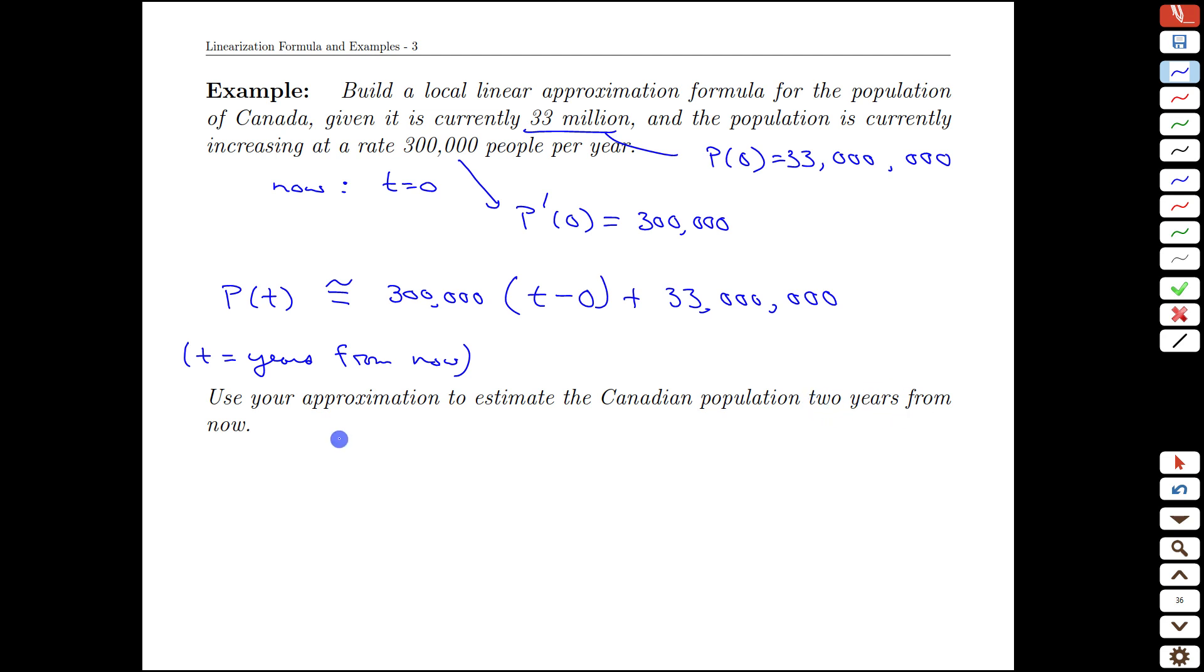Let's use that to predict in the future two years. So t equals two. The population two years from now is going to be approximately equal to our 300,000 times two plus 33 million. So we're going to be at a population of 33 million, 600,000 people approximately after two years or two years into the future using our derivative as a prediction tool.